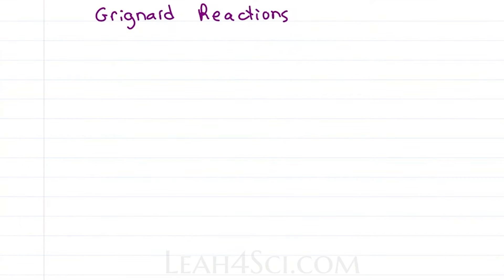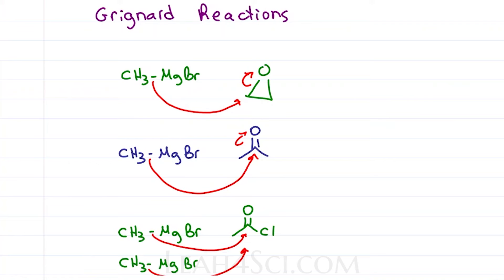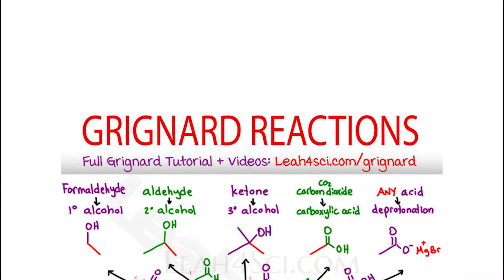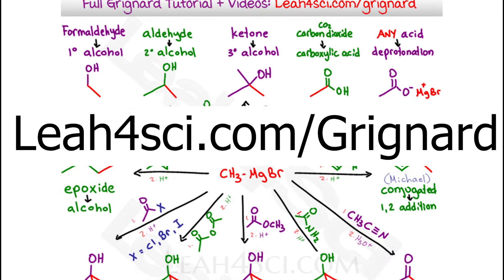Grignards will undergo many different reactions from opening epoxide rings, attacking carbonyls, and even a double attack on carboxylic acid derivatives like this acid chloride. In fact, because there are so many, I have an entire tutorial and Grignard cheat sheet on my website linked below at leah4sci.com/Grignard.